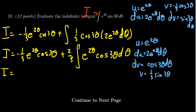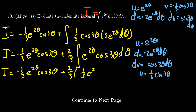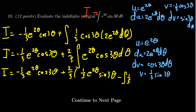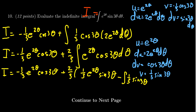Applying the second integration by parts, I equals negative one third e to the two theta cosine of three theta. The two thirds applies to everything that follows: we get two thirds times one third e to the two theta sine of three theta, minus the integral of one third sine of three theta times two e to the two theta d theta. That last integral, up to a constant multiple, is in fact the original integral I.